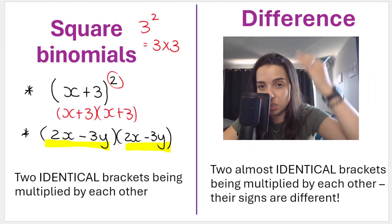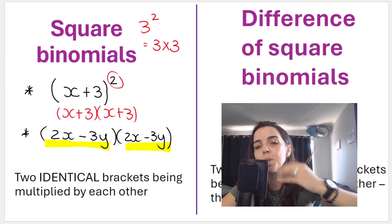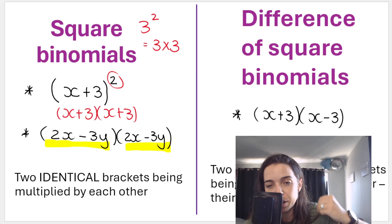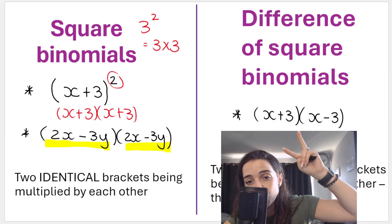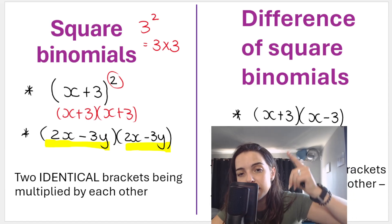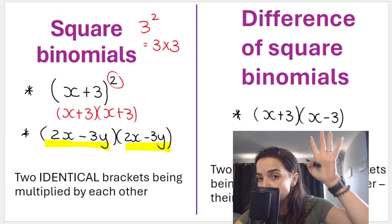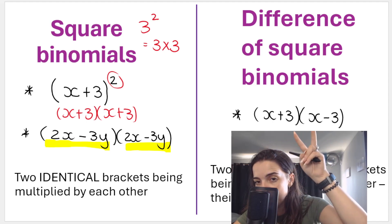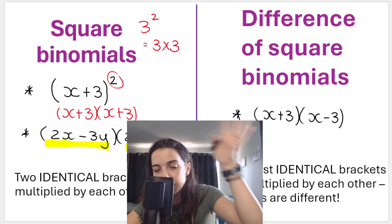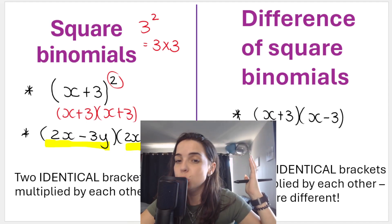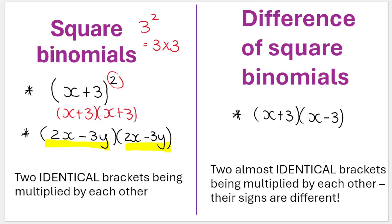Then we have what we call the difference of square binomials, or difference between two squares binomials. Can you see that these brackets are almost identical? But this one is a plus, and that one is a minus. Again, I have a shortcut for multiplying binomials like this. Just take note that these are two separate scenarios, two separate shortcut methods, which we'll do. I'll see you in the next video. Bye, everyone.